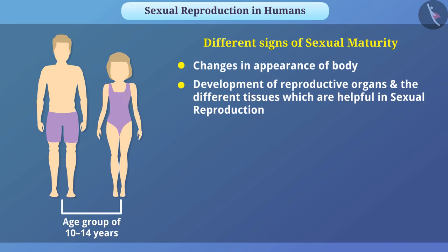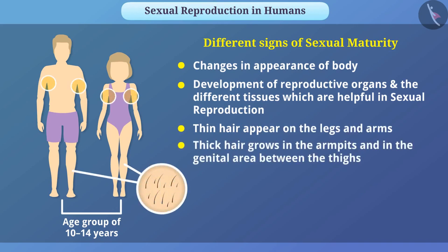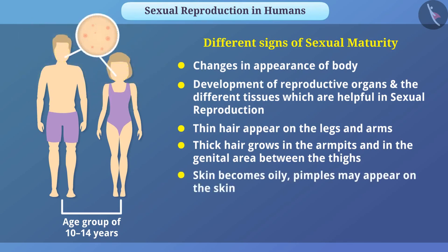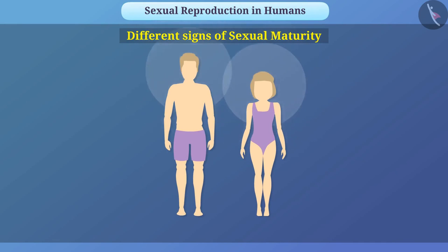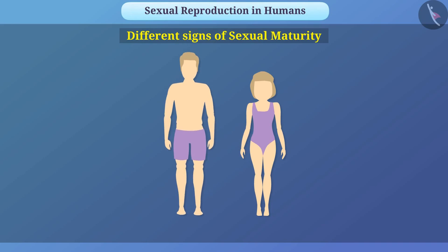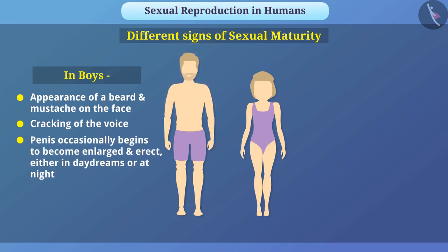There are different signs of sexual maturity: thin hair appears on the legs and arms, thick hair grows in the armpits and in the genital area, the skin becomes oily, and pimples may appear. Along with physical and mental changes, there are hormonal and emotional changes too. In boys, there is appearance of a beard and moustache on the face, cracking of the voice, and the penis occasionally begins to become enlarged and erect.